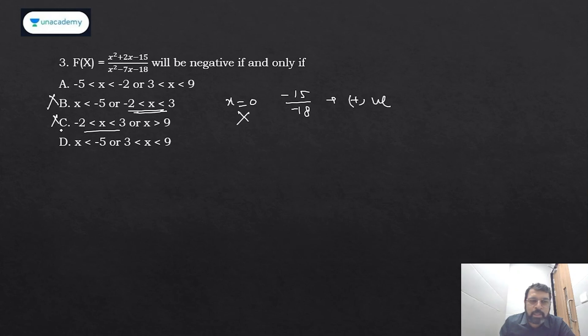And if you see A and D, 3 and 9 are already there, so we need not check this. First says between -5 and -2, second says less than -5. Take any value which is in one option but not in the other. Let's check for this. If I take any value between -5 and -2, let's take x = -3 and put it here. If it satisfies, answer will be A. If it does not satisfy, answer will be D. So just put x = -3: it will be 9 - 6 - 15...